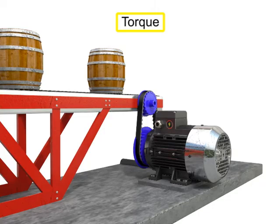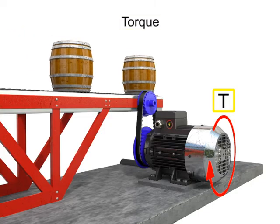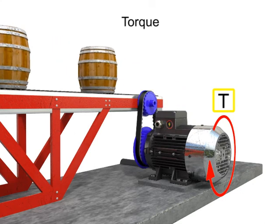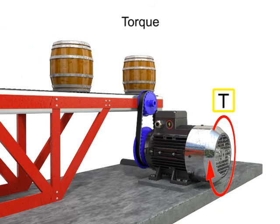Torque in a rotary device is the counterpart to force in a cylinder. Torque is defined as a strength which, if sufficient, will cause rotary motion in a rotatable body.